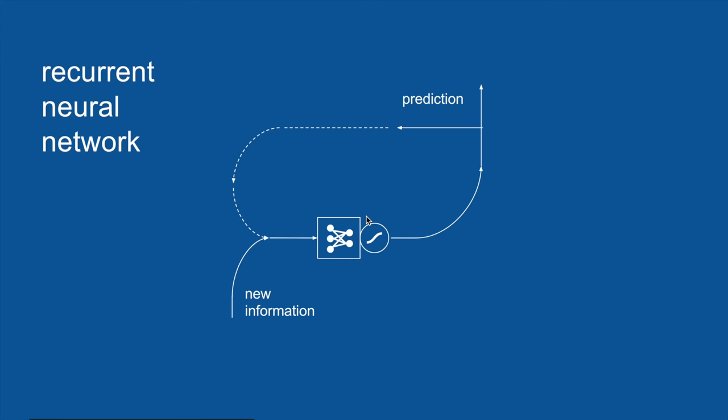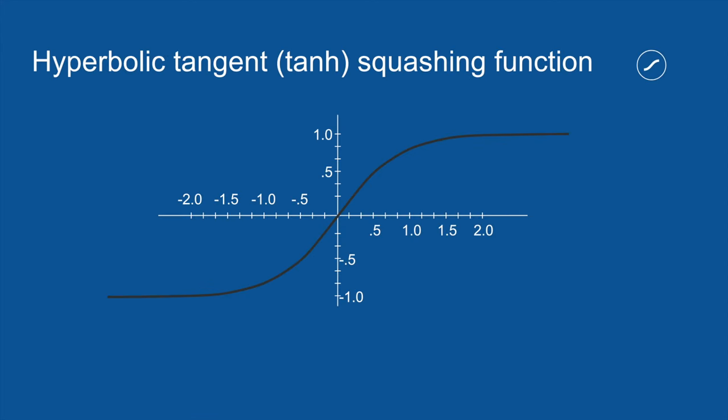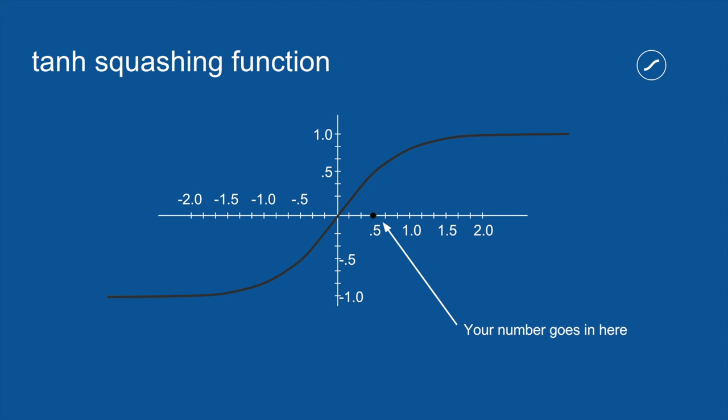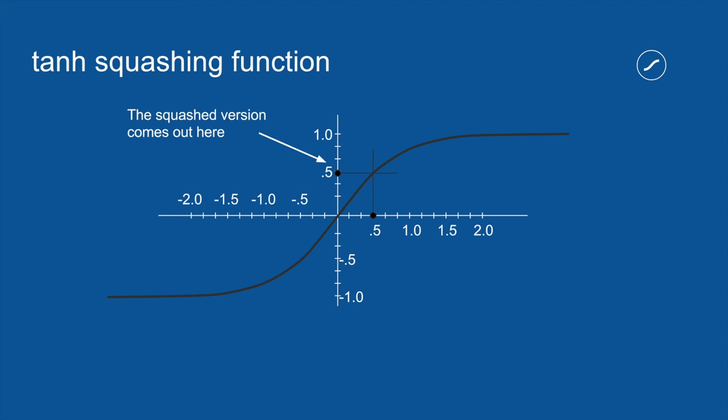There's one more symbol we haven't talked about yet: a squashing function, which just helps the network to behave. How it works: you take all of your votes coming out and subject them to this squashing function. For instance, if something received a total vote of 0.5, you draw a vertical line up where it crosses the function, then draw a horizontal line over to the y-axis — and there's your squashed version out.